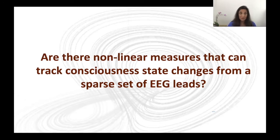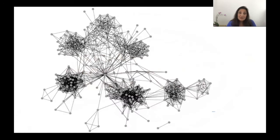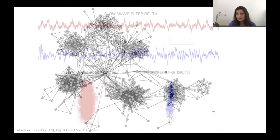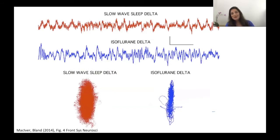The answer is yes — there are certain metrics that characterize complexity and ways of computing complexity that can serve as a surrogate for information processing capacity. You can capture this dynamical property from just a single lead. There are times that frequency-based measures do not completely capture level of consciousness or the consciousness state.